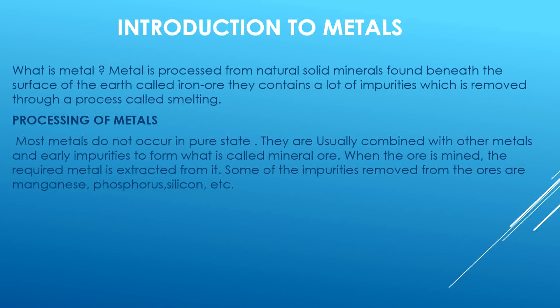Finally, we mentioned the processing of timber from the growing of the tree to the production of timbers into planks. Today we are talking about metals — the processing of metals. Metal can be defined as a material processed from natural resources, specifically from the natural mineral form found beneath the surface of the earth. Most metals do not occur in a pure state; they are combined with other metals and earthly impurities to form what is called mineral ore.